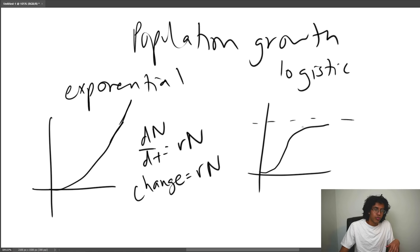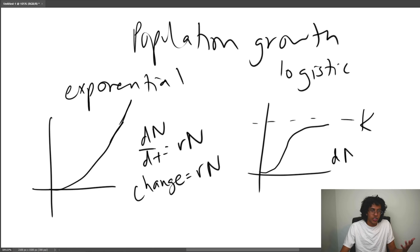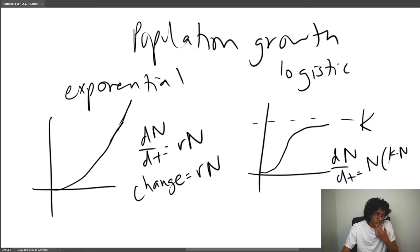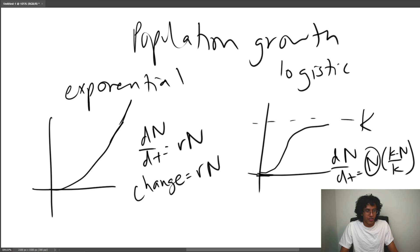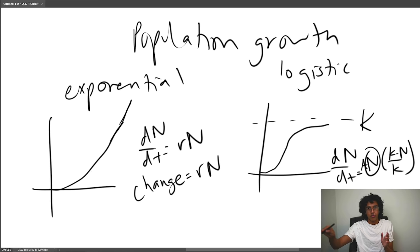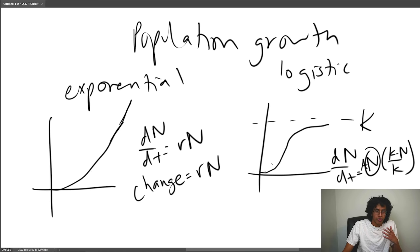The logistic growth equation is dN/dt = rN × (K - N)/K, where K is the carrying capacity. When N equals K, growth stops. The S-curve is flat at the start with very few individuals, grows rapidly in the middle, then levels off at the carrying capacity. Note that the beginning of a logistic curve looks just like exponential growth, because when you're far from the carrying capacity it doesn't really affect you.